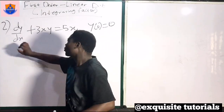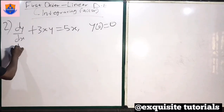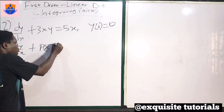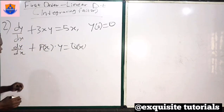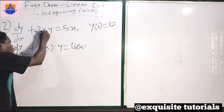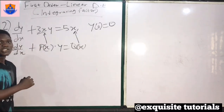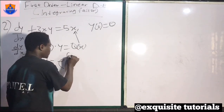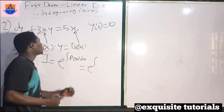Now let's move to question 2. We have dy over dx. Let's compare this with our general equation. The dy/dx matches dy/dx. The coefficient of y is 3x. So it means that p of x is 3x, and q of x is 5x. What will be our integrating factor? It is the exponential of the integral of p of x dx, and p of x is 3x.